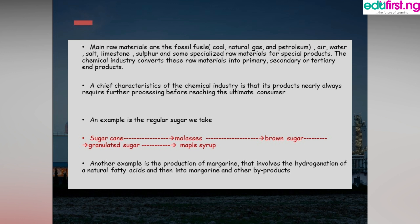The chemical industry converts raw materials into primary, secondary, or tertiary end products. A chief characteristic of the chemical industry is that its products nearly always require further processing before reaching the ultimate consumer. For example, the white granulated sugar we use — gotten from sugar cane or beet — undergoes many processes: crushing, producing molasses, then brown sugar, and through purification we arrive at granulated white sugar, and from that we get maple syrup.